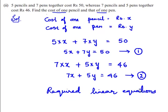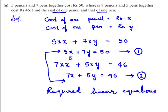The two equations are 5x plus 7y equals 50, and 7x plus 5y equals 46. Now we must solve these two linear equations in order to find out the values of x and y.